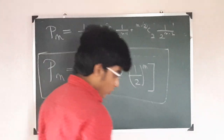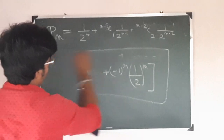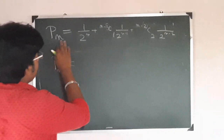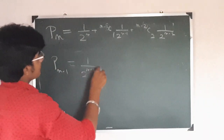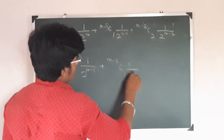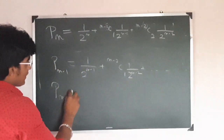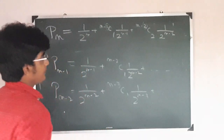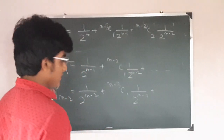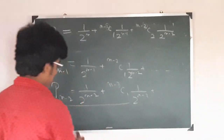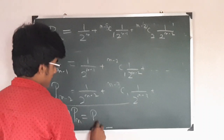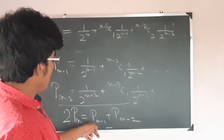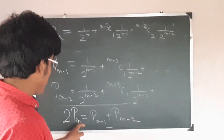From this theorem we also get one more conclusion. What is P(N-1)? We simply put N minus 1 in place of N. And what is P(N-2)? Similarly. If you add up P(N-1) and P(N-2), you will find that 2·P(N) = P(N-1) + P(N-2). The addition of these two is double the net probability of getting N points.